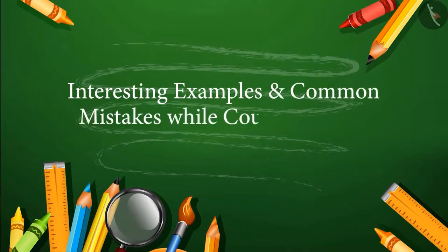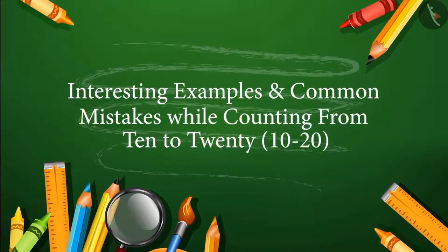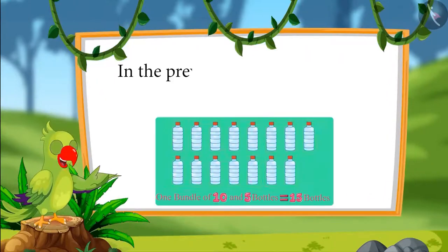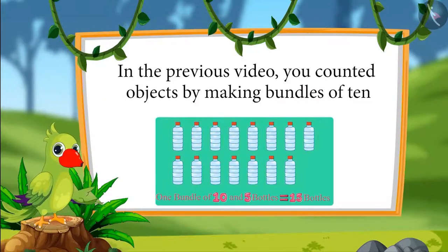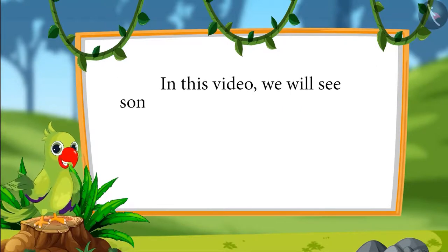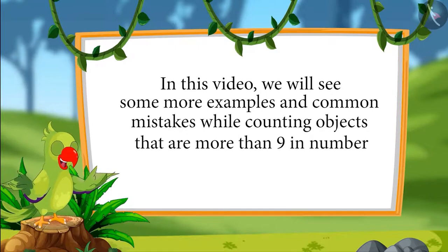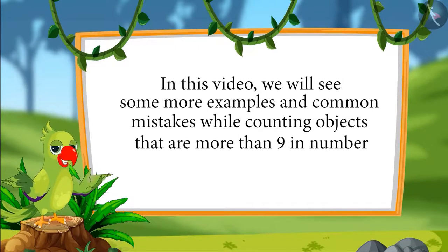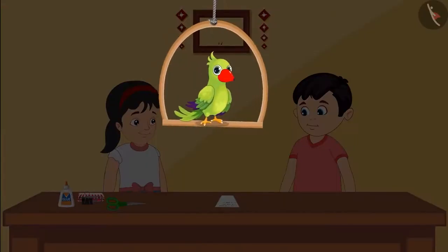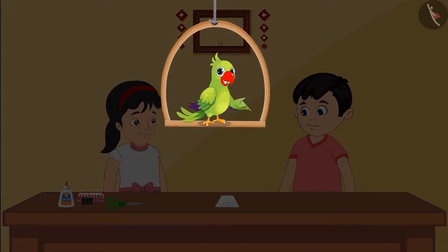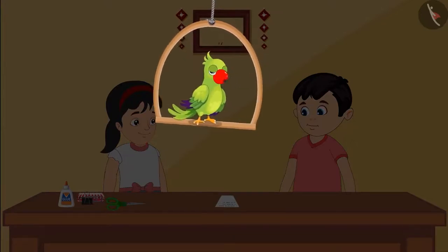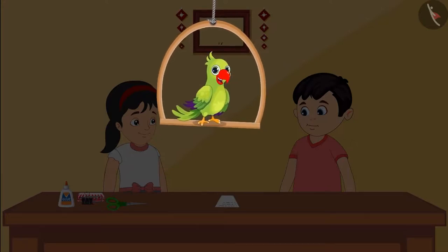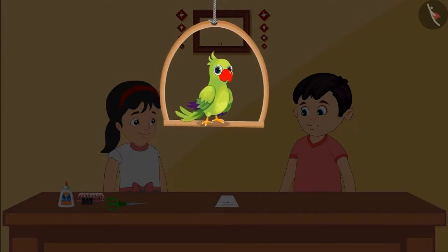Interesting examples and common mistakes while counting from 10 to 20. So children, in the previous video, you counted objects by making bundles of 10. In this video, we will see some more examples and common mistakes to avoid while counting objects more than 9. Today is Pinky and Chotu's parents' wedding anniversary, and Pinky and Chotu decide to make a card. Pinky needs some objects and makes a list of them.